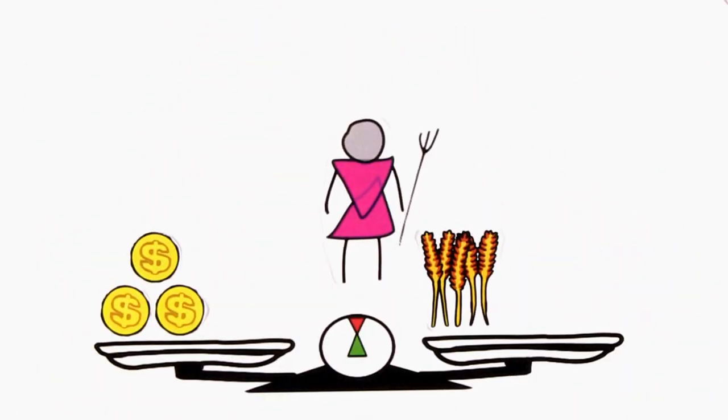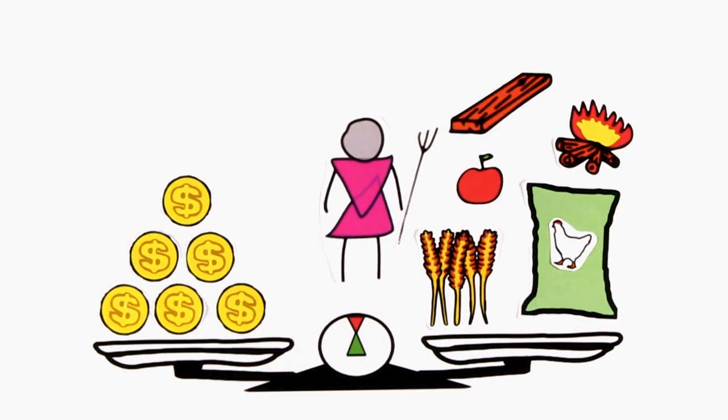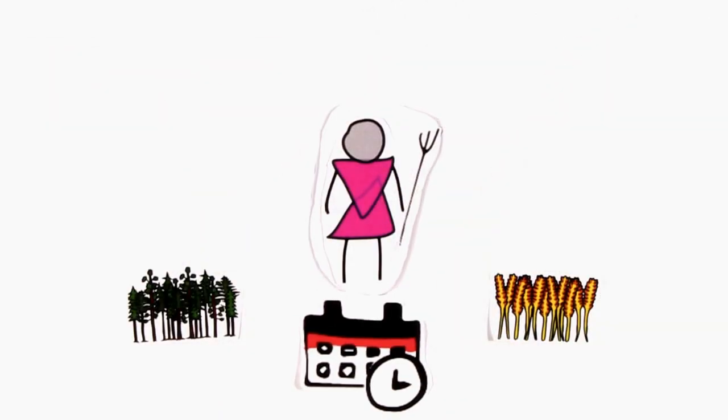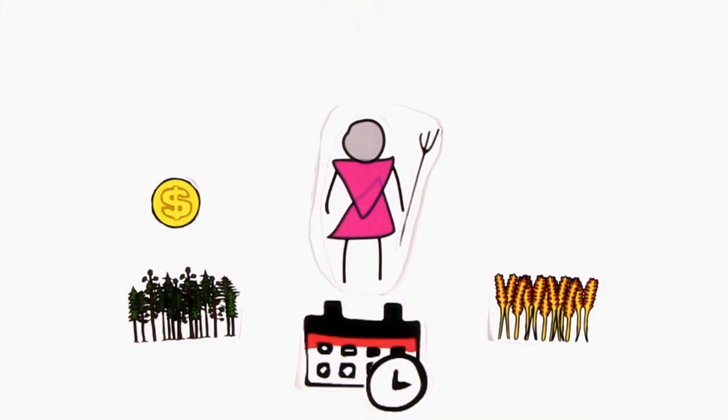Trees can diversify a farmer's income sources. They can provide fodder for livestock, food such as fruit and nuts, firewood and timber. In contrast to annual crops, trees in general have a much slower rate of income return. They may take several years before they start paying off.